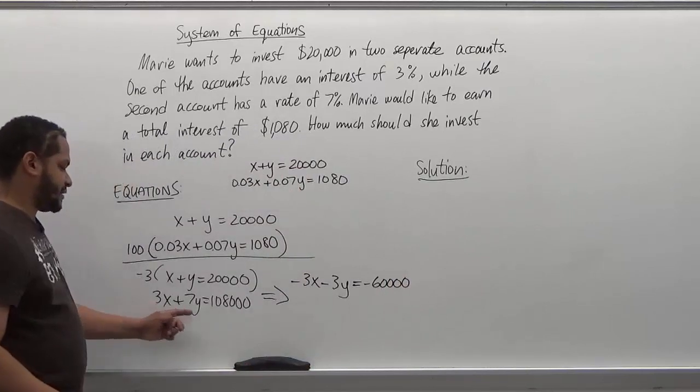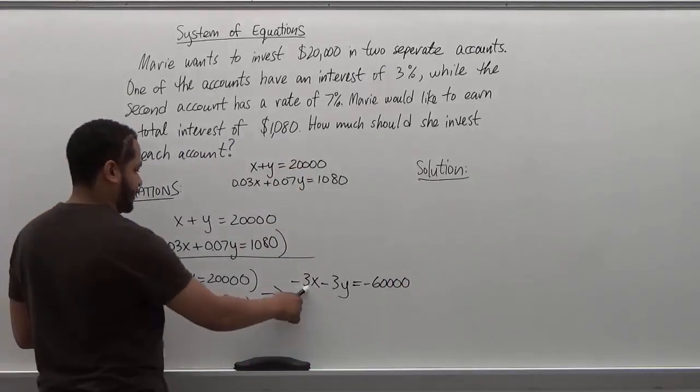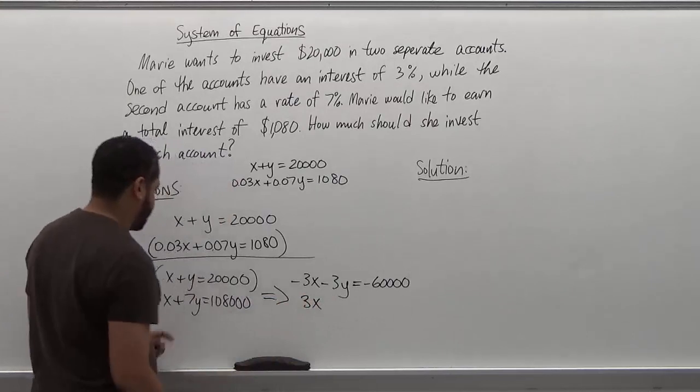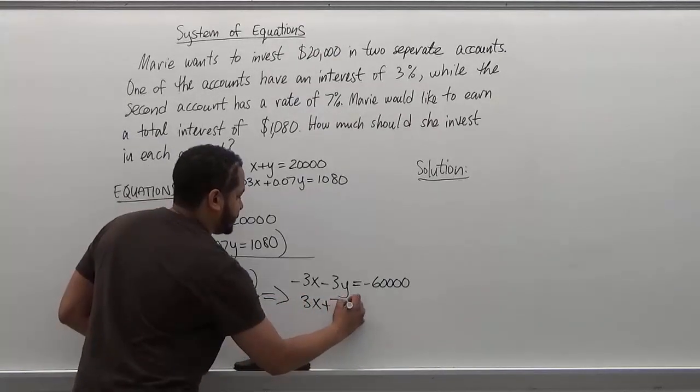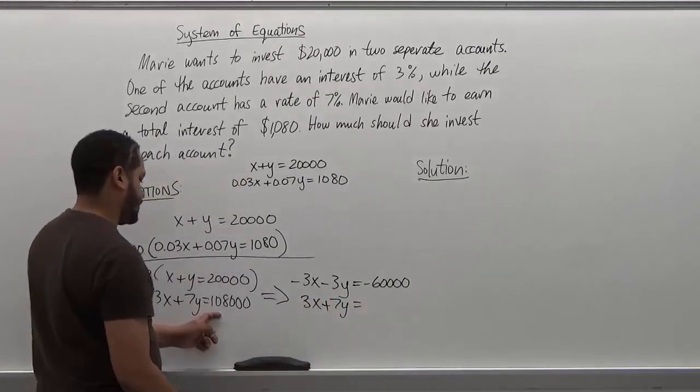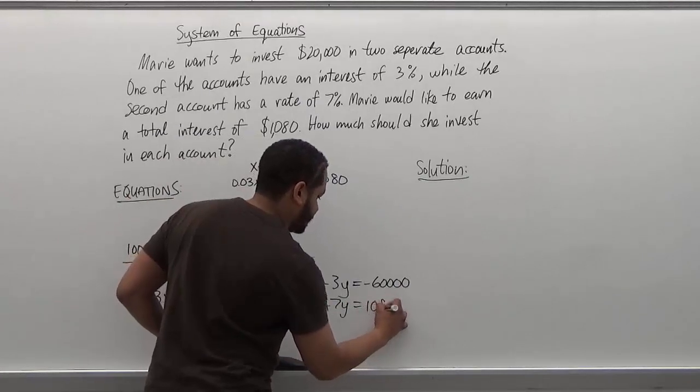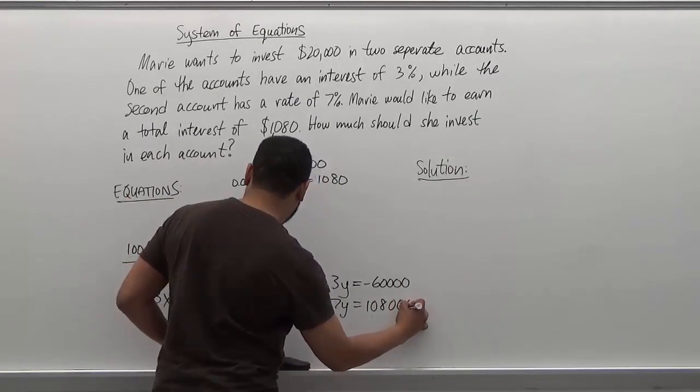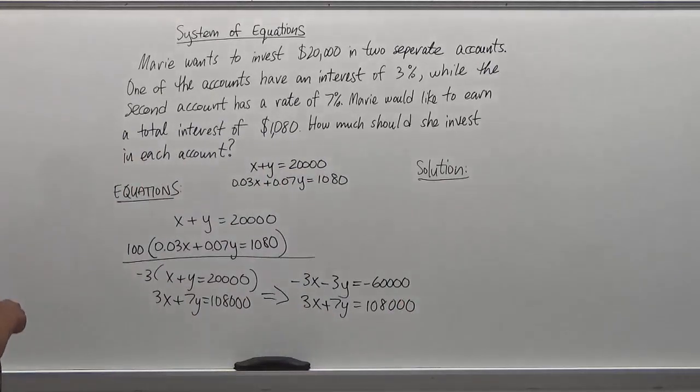I'm going to keep everything the same here because now my 3x and negative 3x are opposites. So I have 3x plus 7y equal 108,000. Alright? That looks about right.